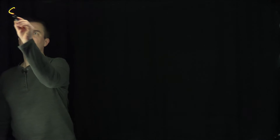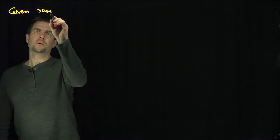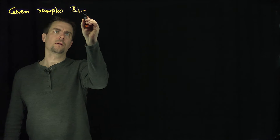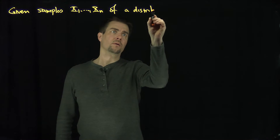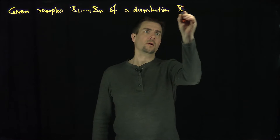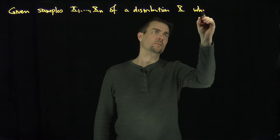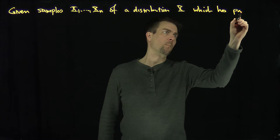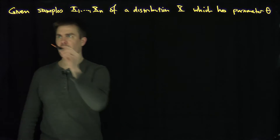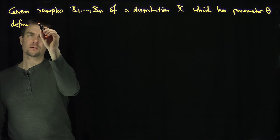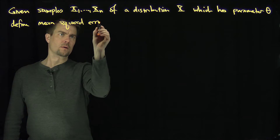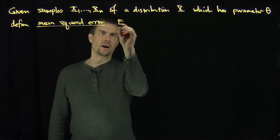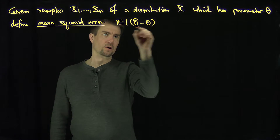Hello students. In this video we'll discuss the mean squared error of an estimator. If I'm given samples x1 through xn of a distribution x which has parameter theta, we define the mean squared error to be the expected value of your estimator minus the true parameter, squared.